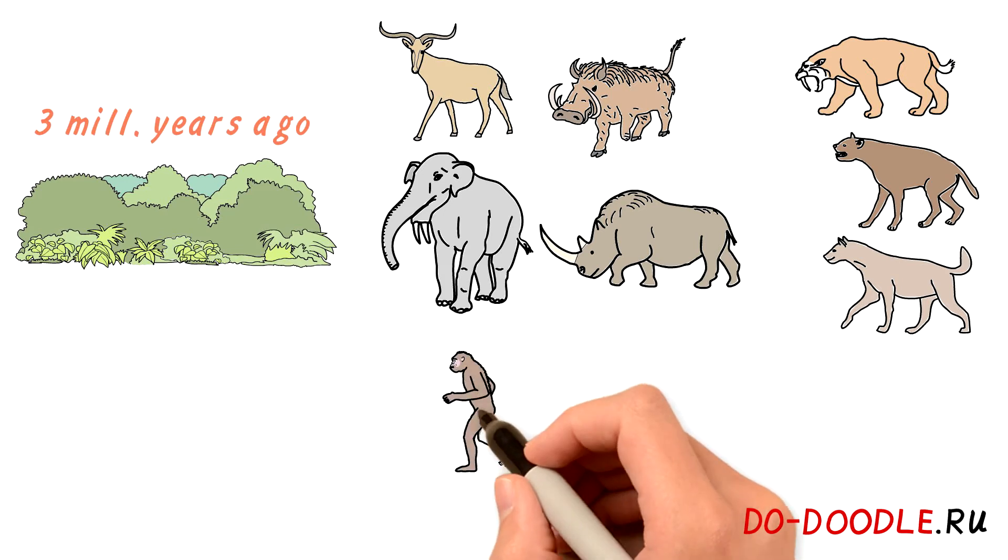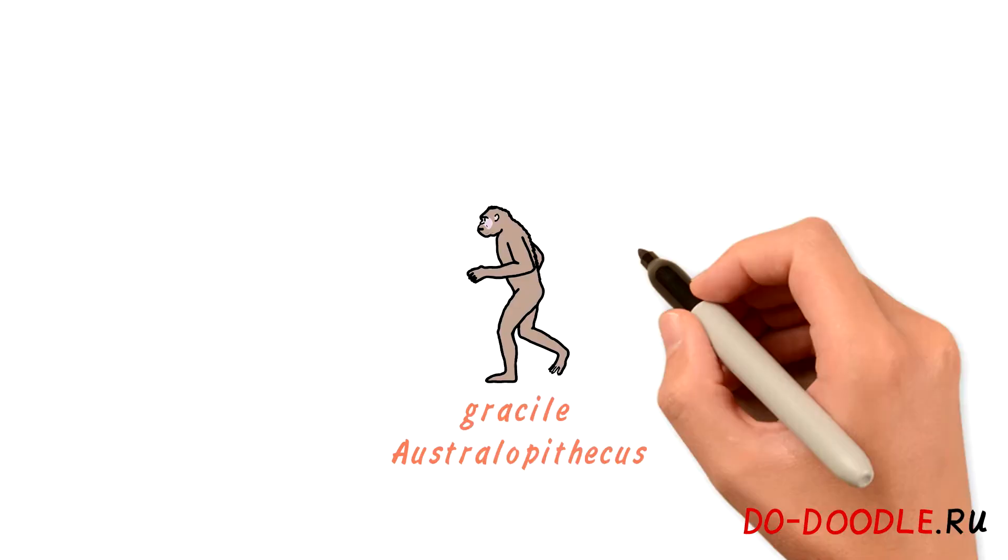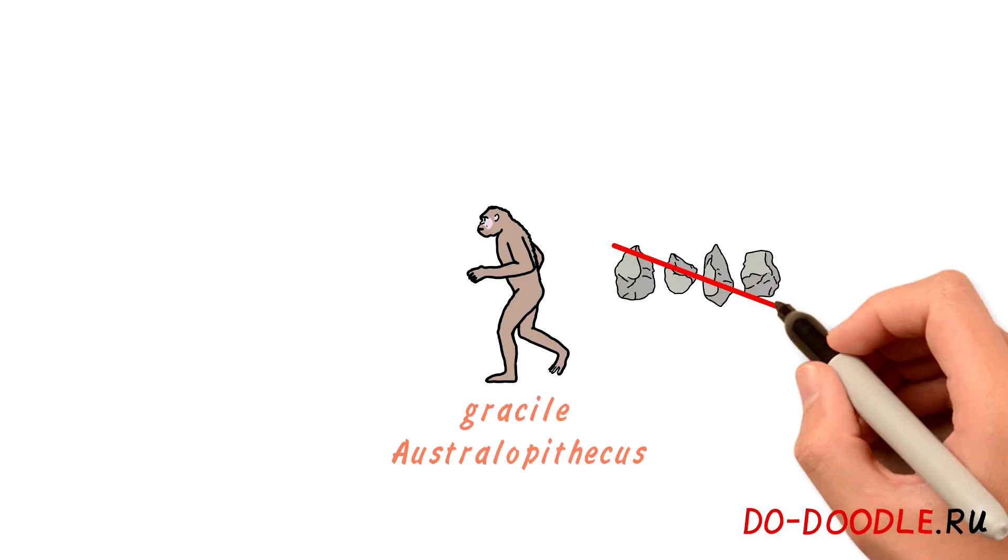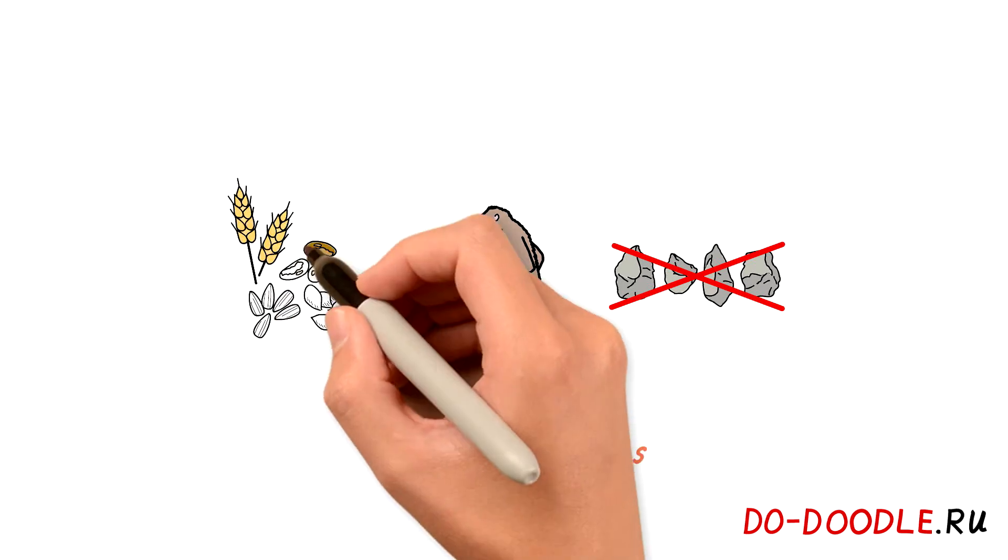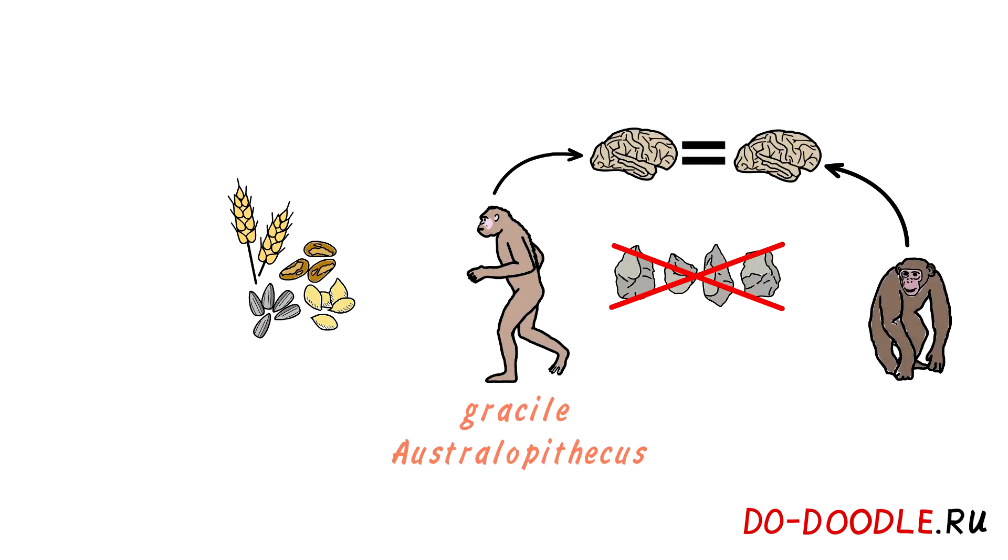Our ancestors, gracile australopithecus, were also actively participating in this zoo. They could walk on two legs but did not produce any tools. They were plant-eaters and the size of their brains was comparable with modern chimpanzees.